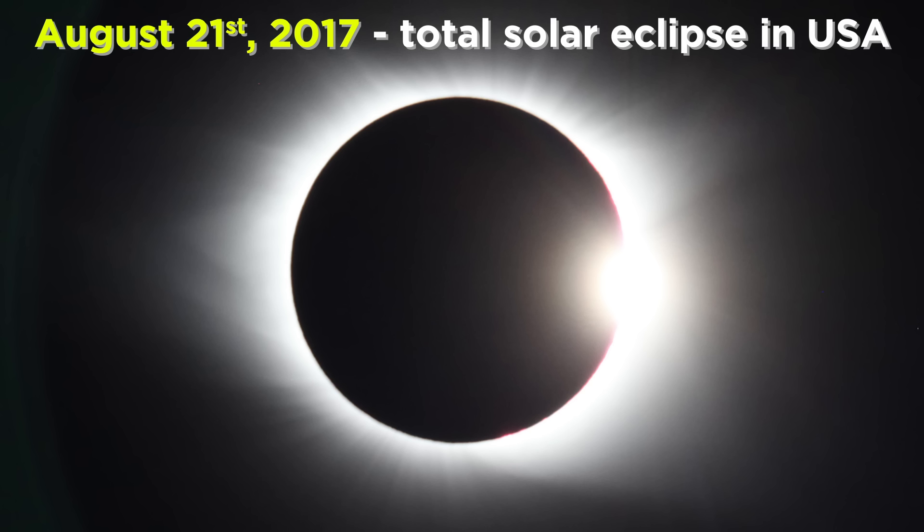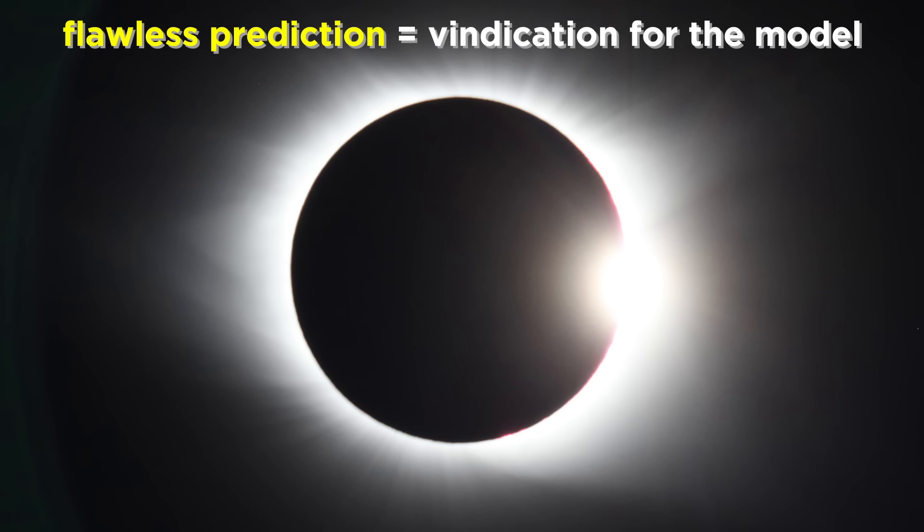So when we operate under this framework, and say that a solar eclipse is going to happen at this time, on this day, in this place, and then it does match our prediction with extreme precision, there can be no clearer vindication for this model of the solar system. Game. Set. Match.